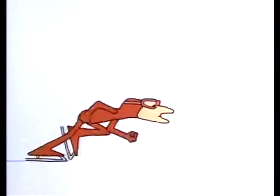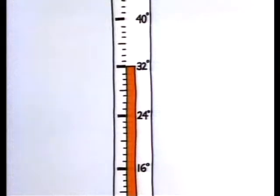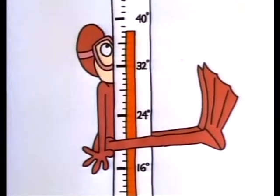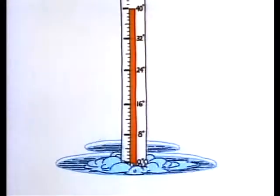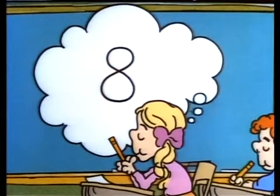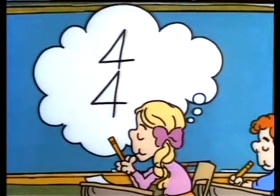One times eight is eight. Two times eight is sixteen. Three times eight is twenty-four. Four times eight is thirty-two. And five times eight is forty. Figure eight is double four.